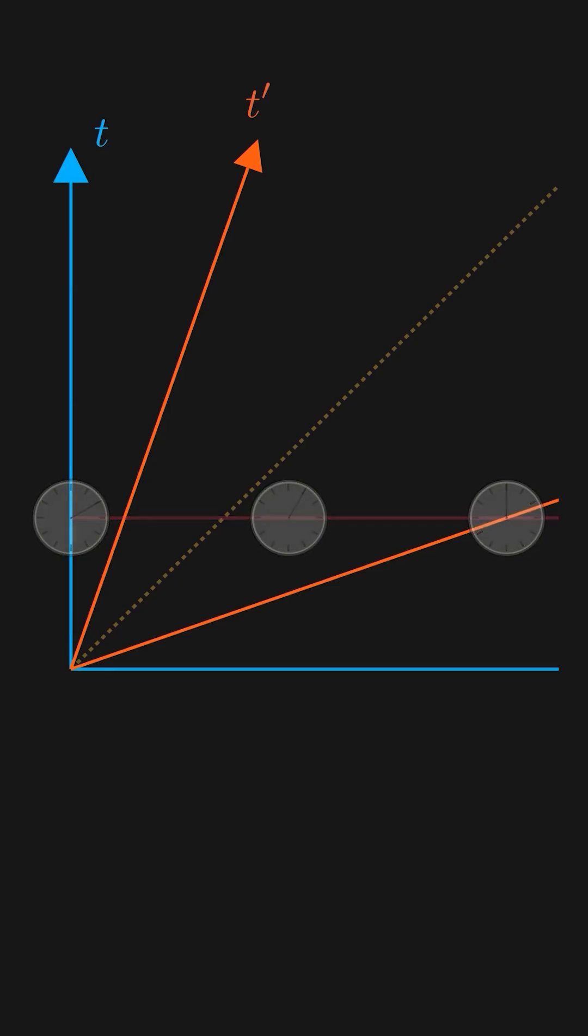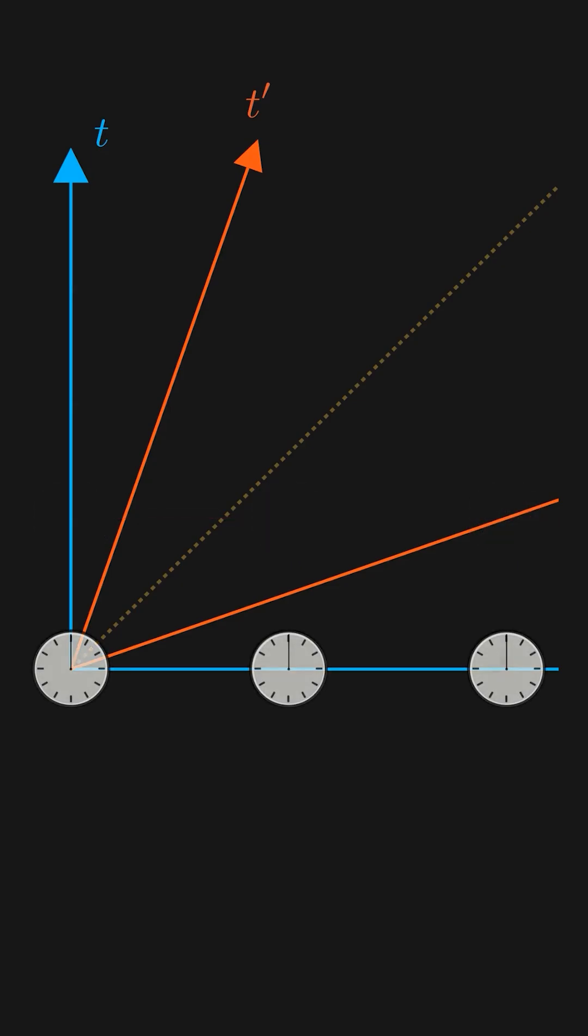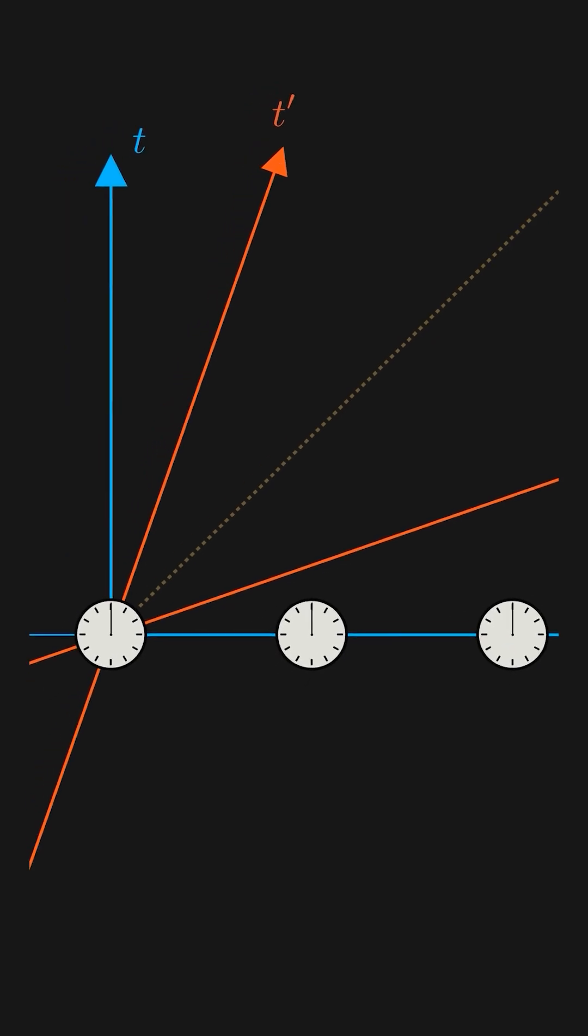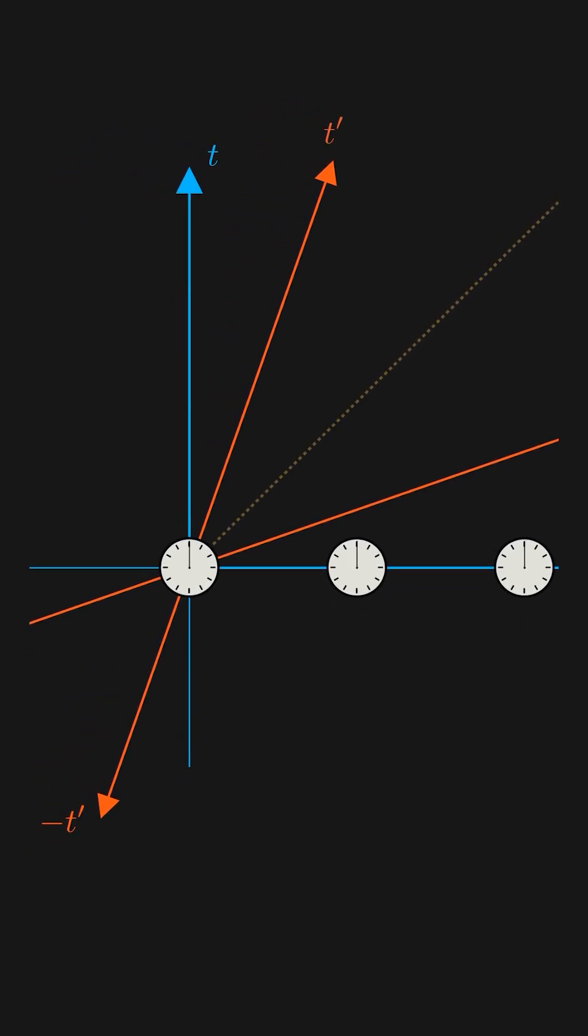We can do the same thing for clocks that are synced on the ground frame. The projection works a little differently now due to the oblique coordinates. We draw lines parallel to the x' axis and project down onto the t' axis.